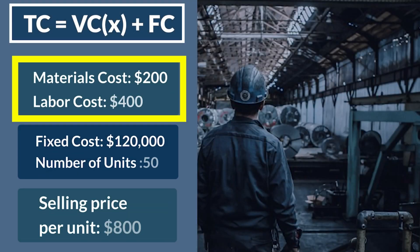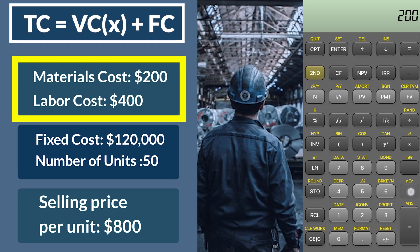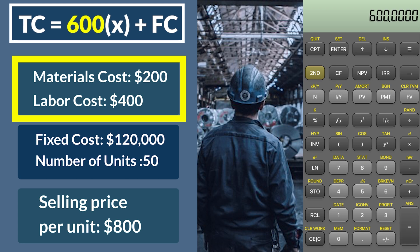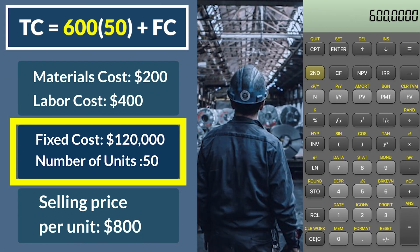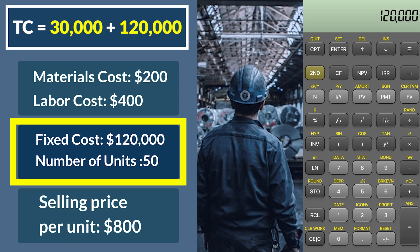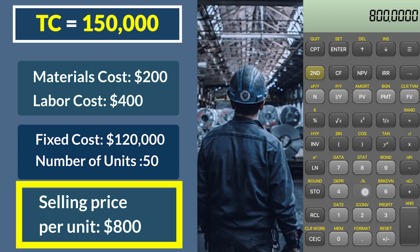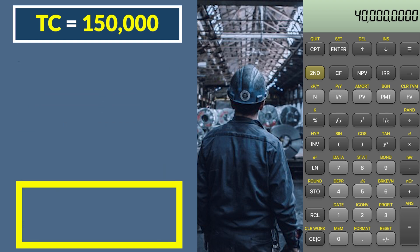In the first example, material cost is $200 and labor cost is $400 per unit. Adding those together gives us a variable cost of $600. We're producing 50 units, so $600 times 50 gives us $30,000. Adding our fixed cost of $120,000 gives us a total cost of $150,000 — that's how much it costs to produce those 50 units. When we sell those units at $800 each, we make $40,000.